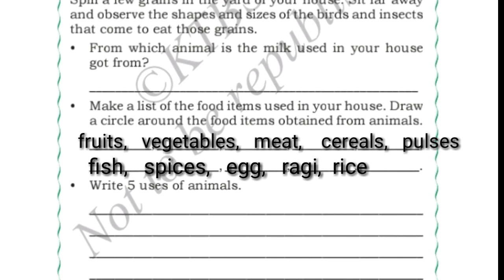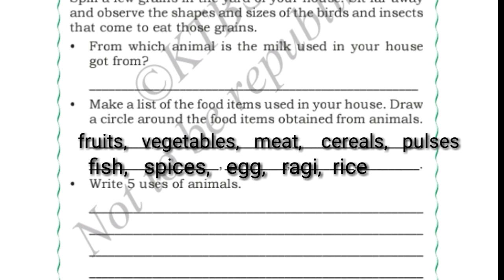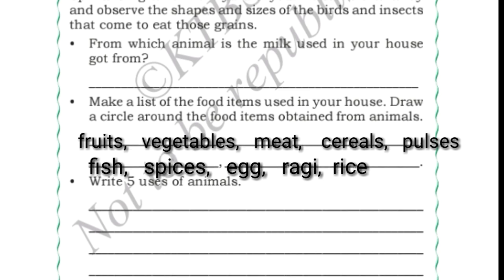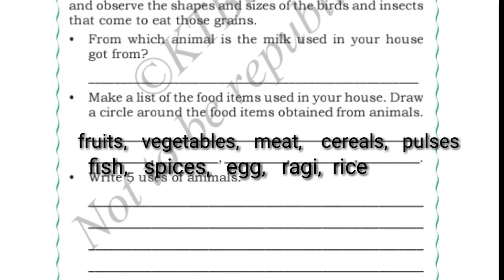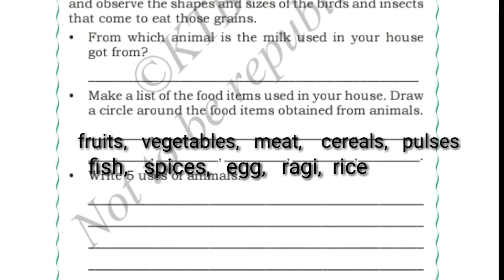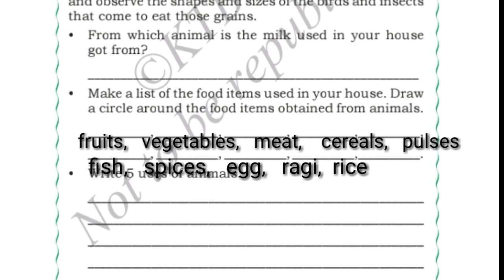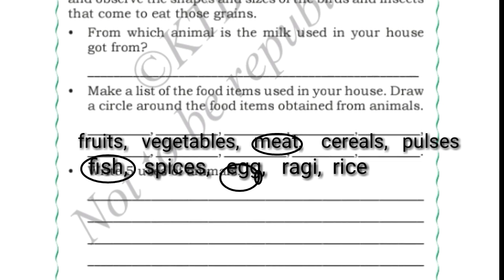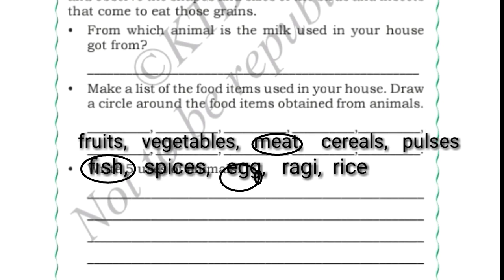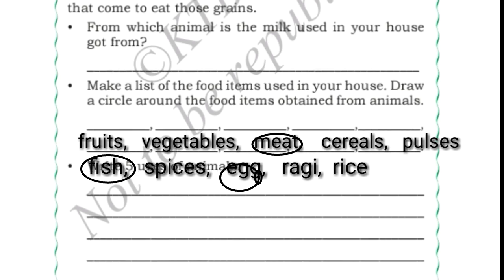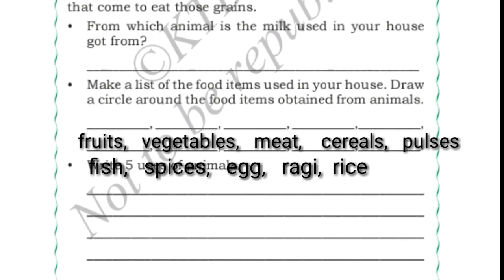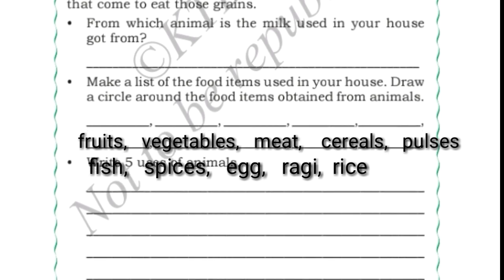These are all the food items we use in our house. Now let us put a circle around the food items obtained from animals. We will put a round mark for meat — we get meat from animals. We get egg from hen, so egg gets a circle. We also get fish from animals, so fish gets a circle.